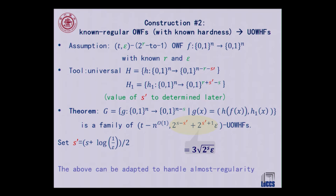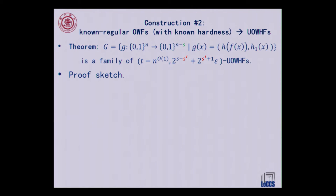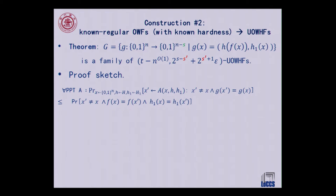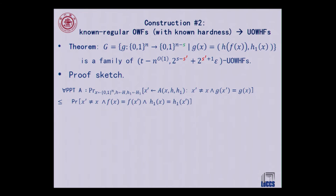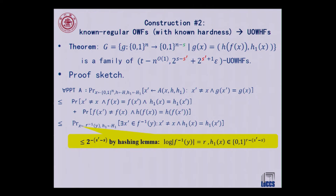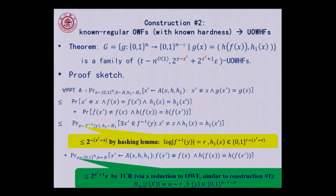The proof is not that hard: if we find a collision in this composite construction of f and h, the collision either already collides on f, or it does not collide on f but eventually collides on h. So the security is bounded by the sum of these two terms.